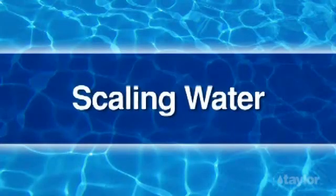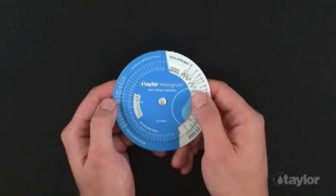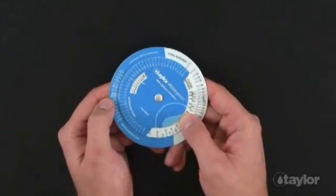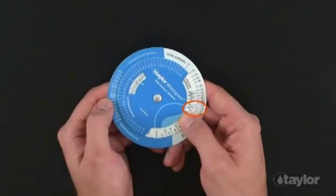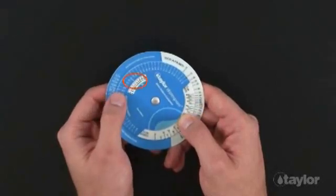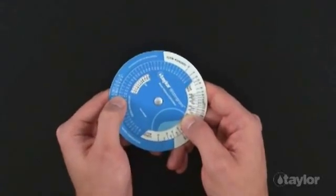Scaling water. In this final demonstration, we will be using values that will give us a saturation index that indicates scaling water. Set the calcium hardness value of 300 opposite the total alkalinity value of 175 on the Watergram. Hold the calcium hardness and the total alkalinity values where they are and turn the wheel until the arrow points to the pH value of 7.8. Find the water temperature of 80 degrees Fahrenheit.